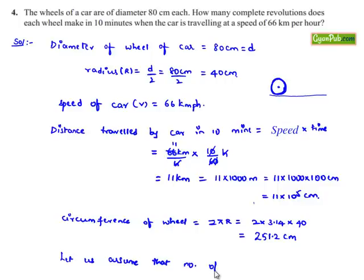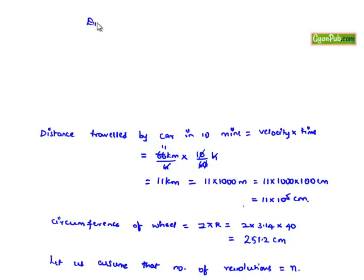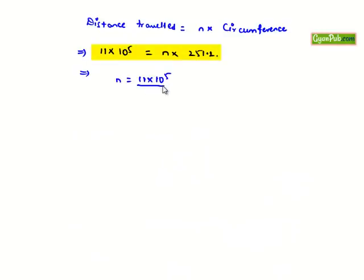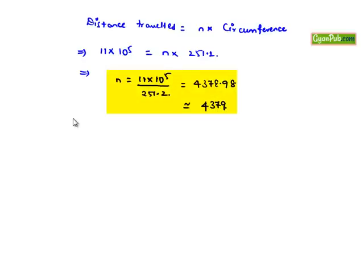The distance travelled equals n times the circumference of the wheel. So 11 × 10⁵ = n × 251.2, which gives n = 11 × 10⁵ / 251.2 ≈ 4378.98, approximately 4379 revolutions. Therefore the number of revolutions made by the wheel is approximately 4379.